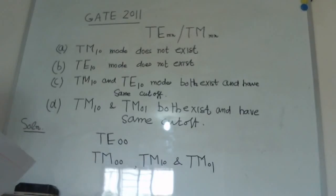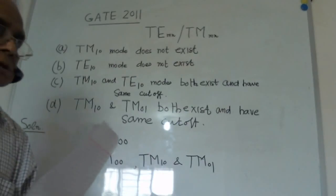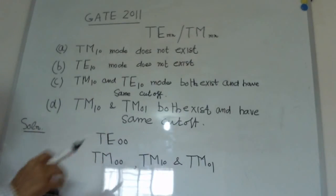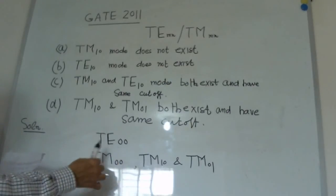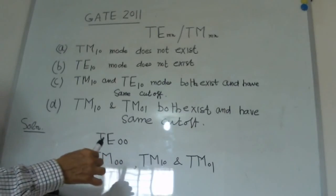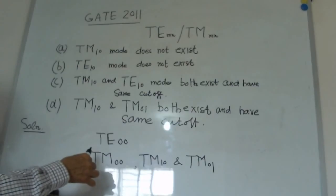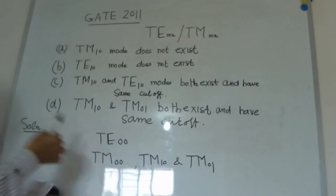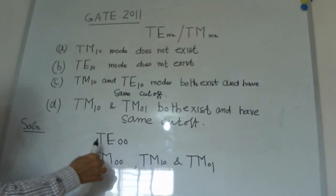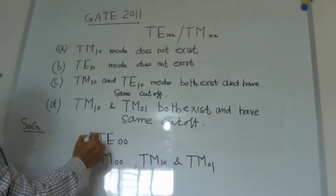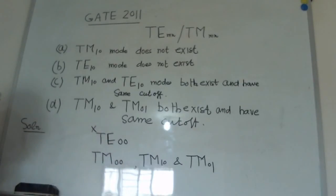Before doing this problem, first we have to see what are the modes which do not exist in the rectangular waveguide. We have already discussed that if there is a TE mode, the only non-existing mode is TE_00. That means TE_00 does not exist.